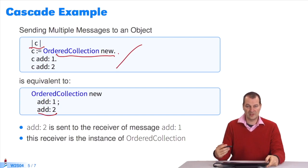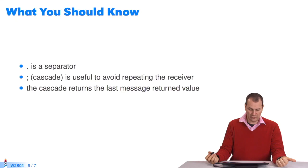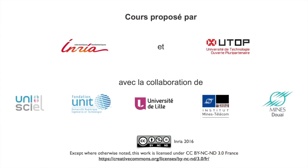Just go step by step. What did we study? Period is a separator. It's the same as semicolon in Java. Semicolon is a cascade, which is useful to avoid repeating the same receiver. The cascade returns the value of the last message sent. The end.